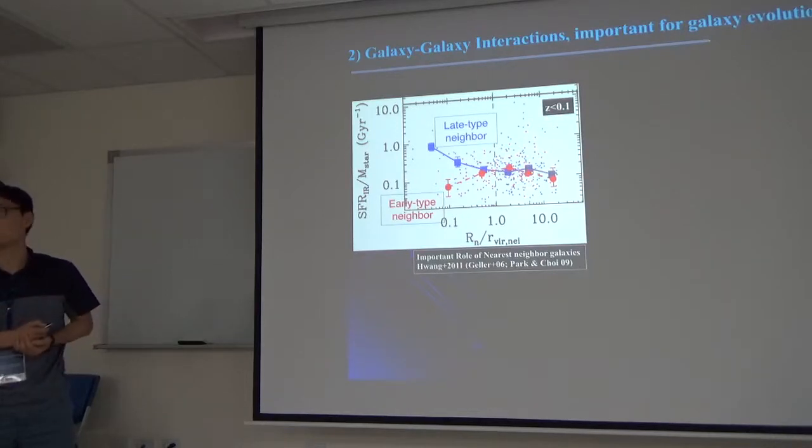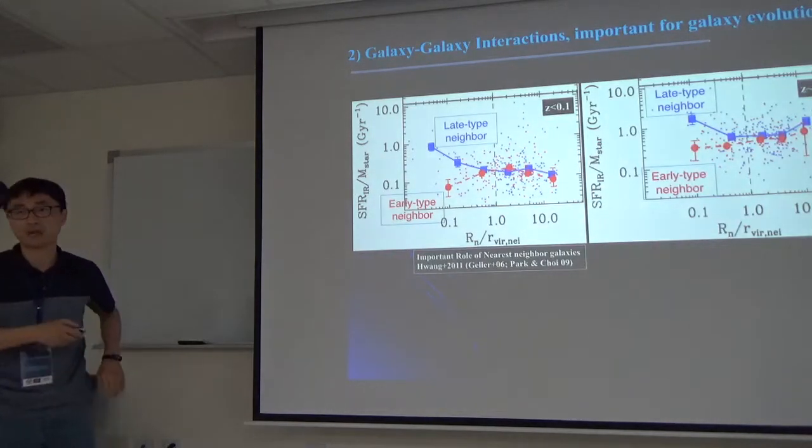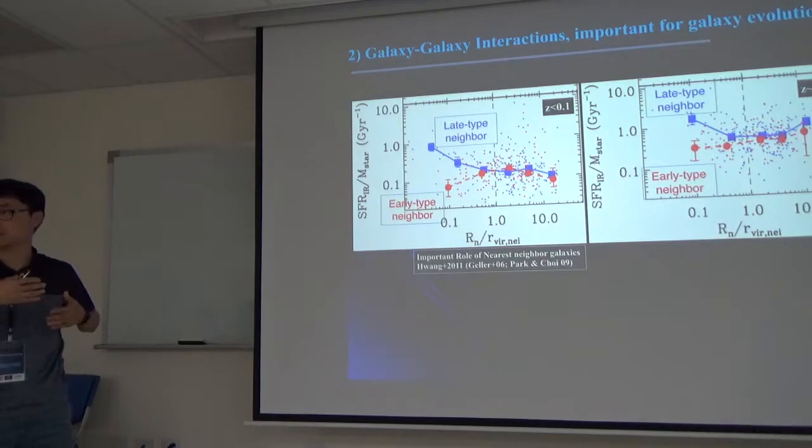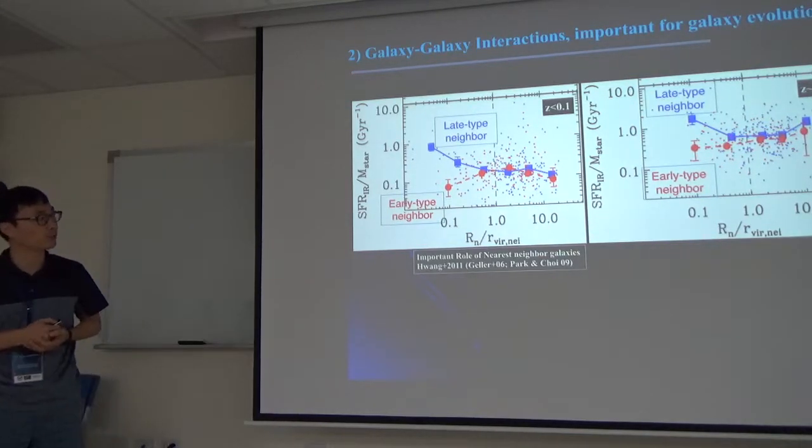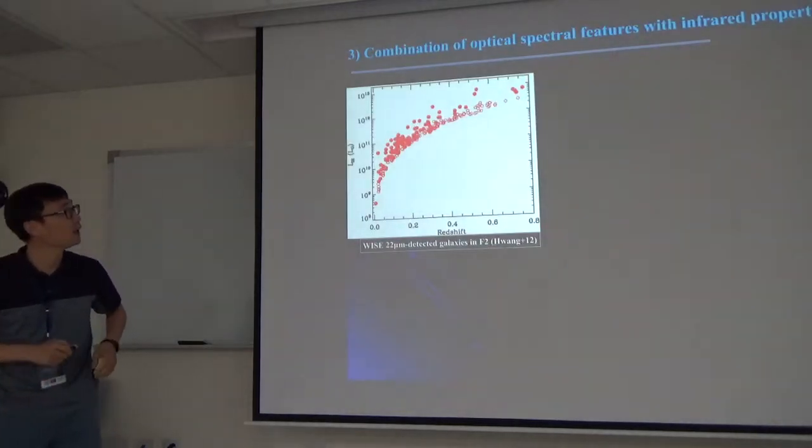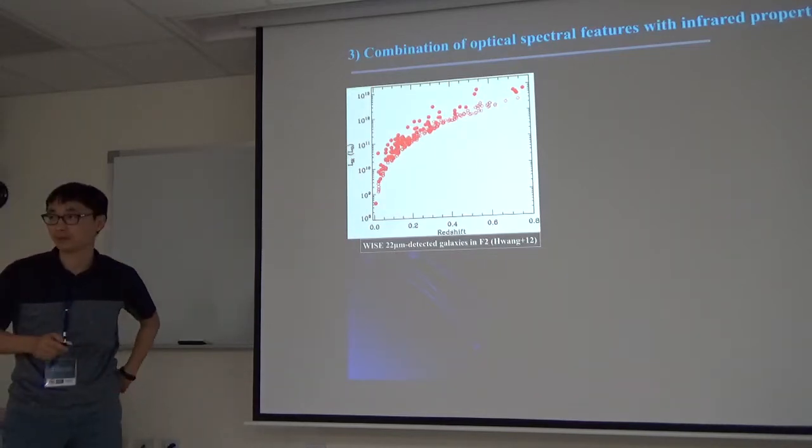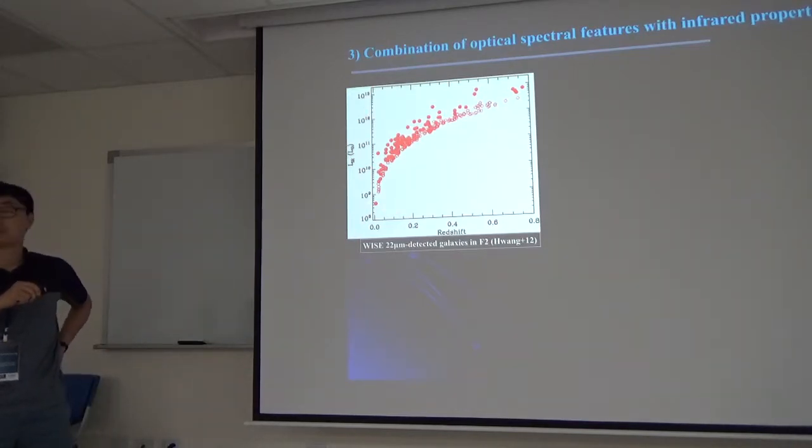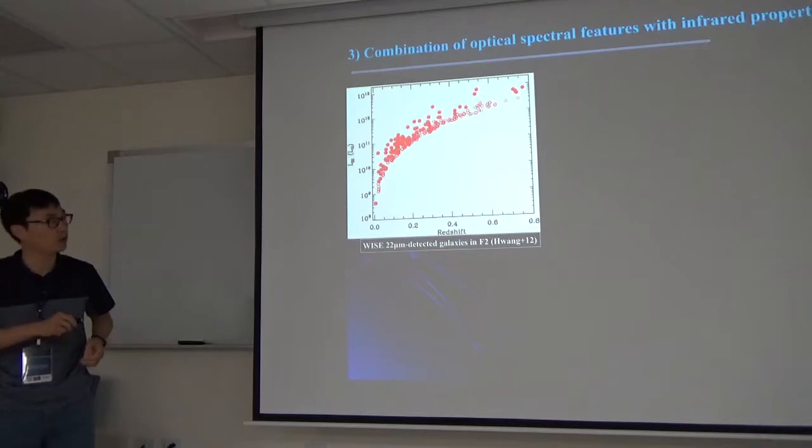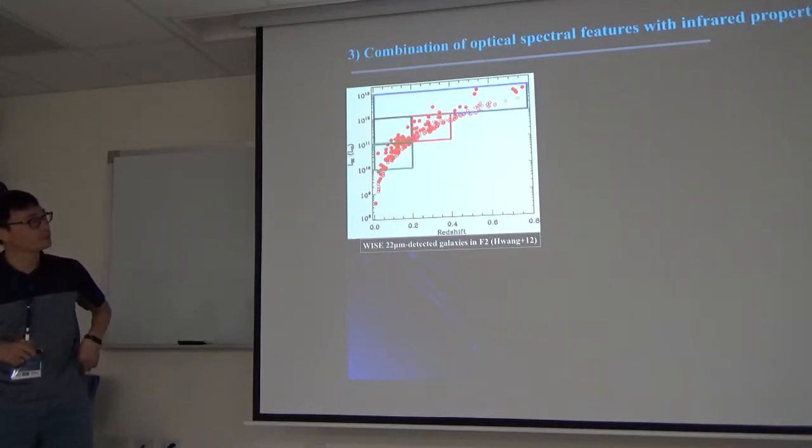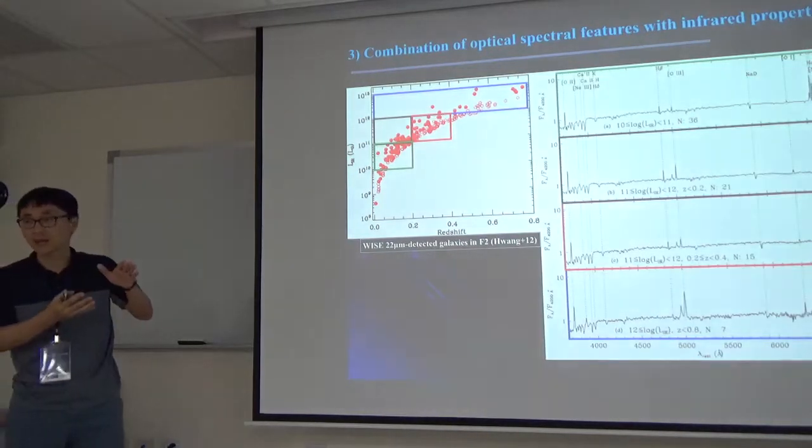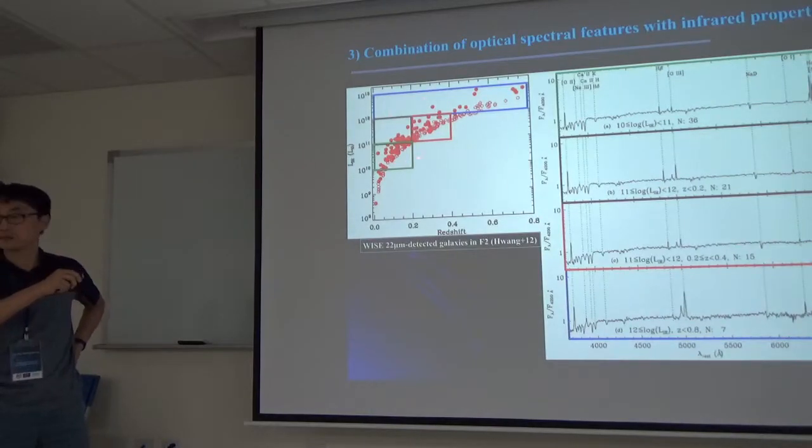You clearly see there is a difference, meaning that depending on the type of neighbor, your star formation activity can change. Actually, when the pair separation is smaller than one virial radius, you start to interact hydrodynamically. Because of different hydrodynamic interactions, your star formation activity can be different. This is for the local universe. If you do the similar analysis for high-redshift galaxies, we can still see such a trend.